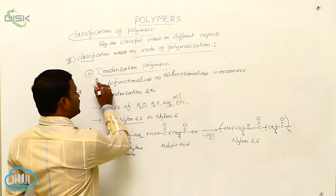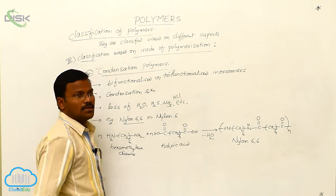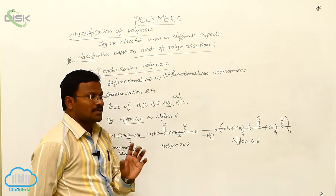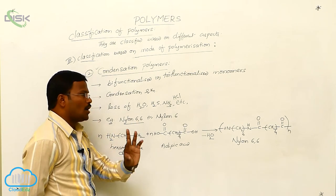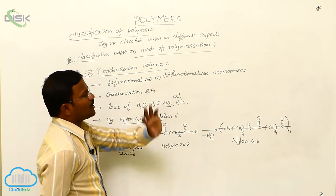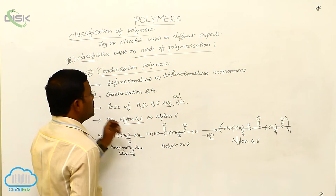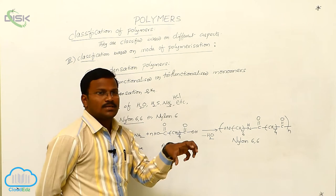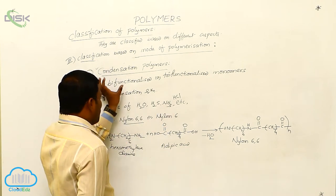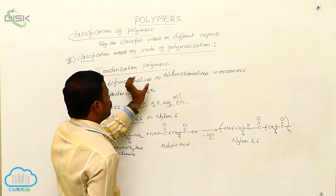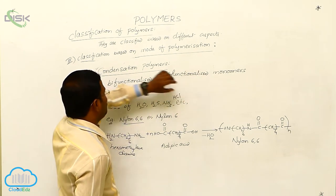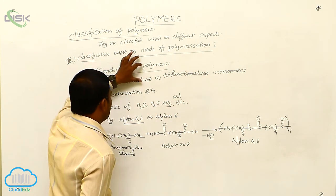Whereas the second category, condensation polymers. Those polymers which result from condensation of two or more similar or different types of monomers are called condensation polymers. Generally, those monomers which are having bifunctionalized or two functional groups or three functional groups only produce condensation polymers.